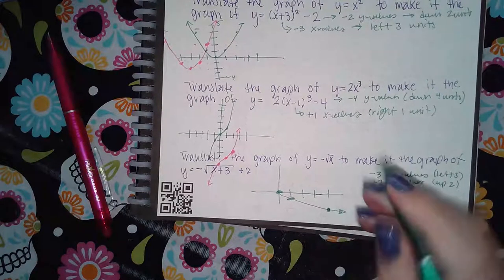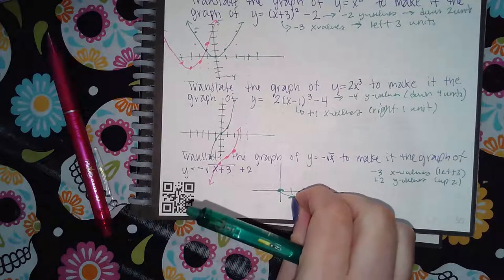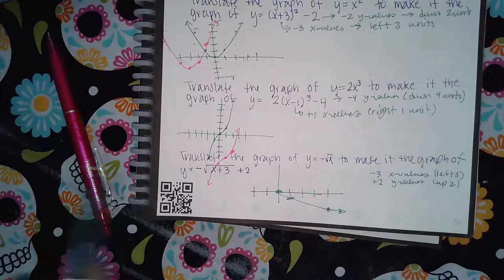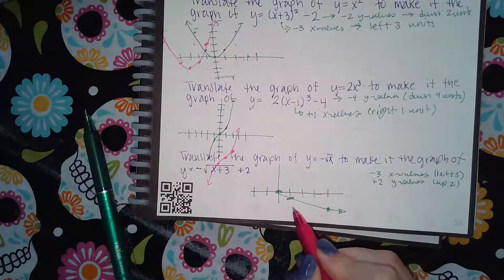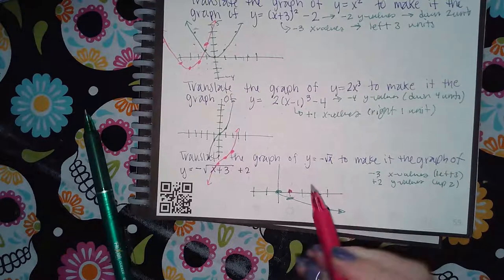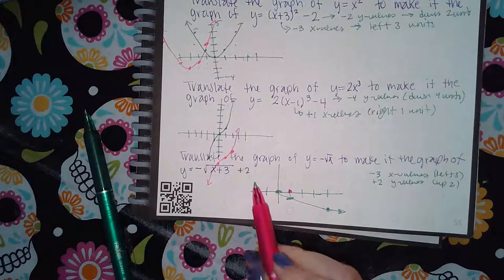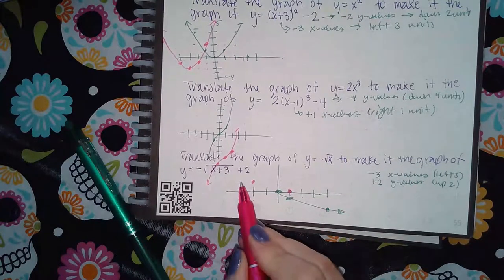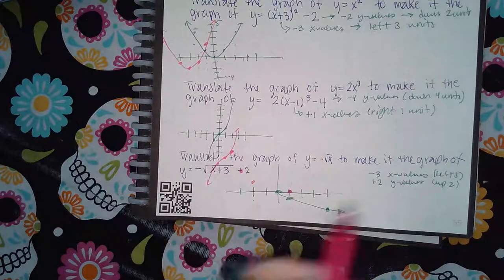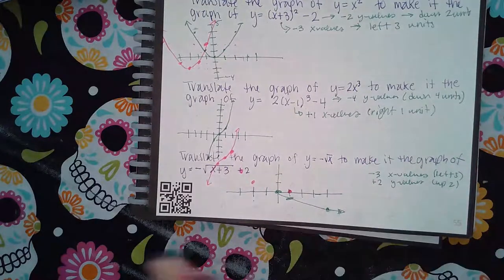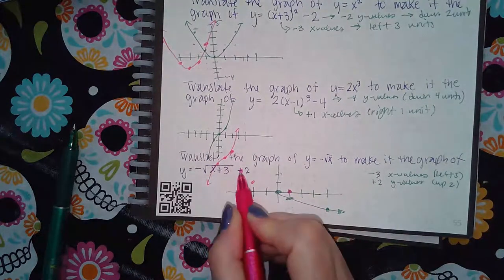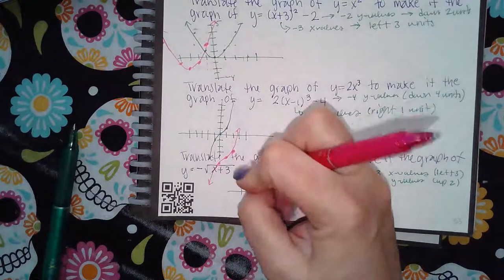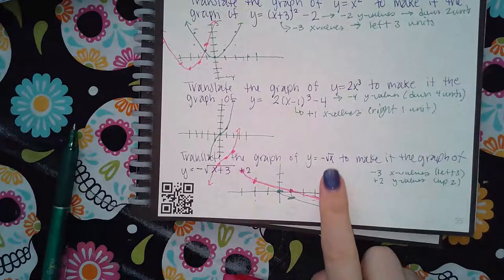So you take the points on the original graph and go left 3 and up 2. The new graph is shown in pink: from (0,0) go left 3 and up 2; from (1,-1) go left 3 and up 2; from the origin point, left 3 and up 2. The new curve ends up here, going in this direction. It does have that same square root shape, and it's downward because it's a negative square root of x that we started with. That's the end of this topic.